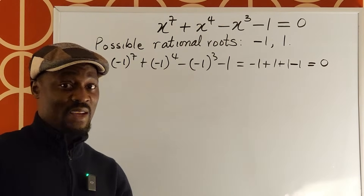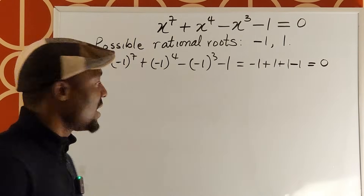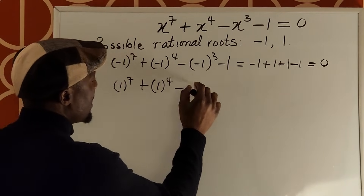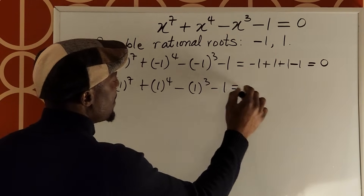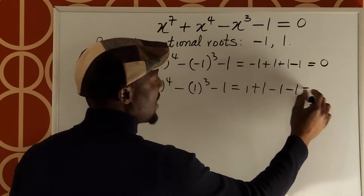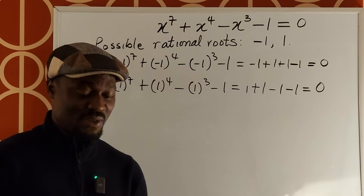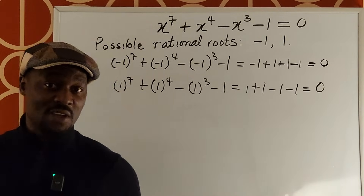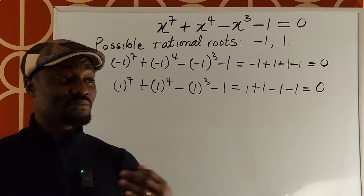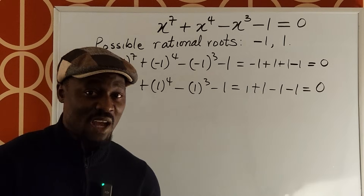Now let's test one. One to the seventh plus one to the fourth minus one to the third minus one equals one plus one minus one minus one, which gives us zero. So one is also a solution. We now have five solutions left to determine. We don't know how to find the others unless we do synthetic division to find a smaller polynomial. We could also use Descartes' Rule of Signs.